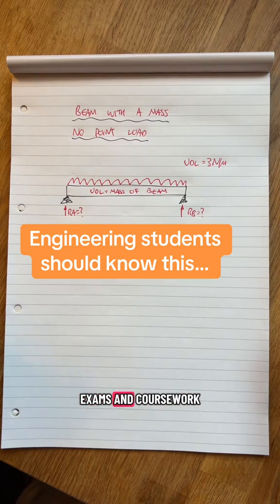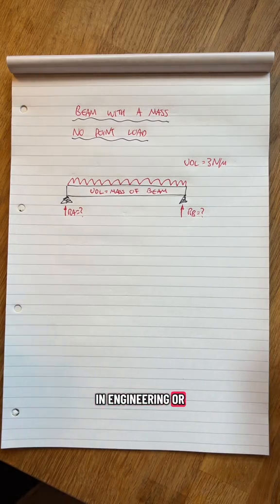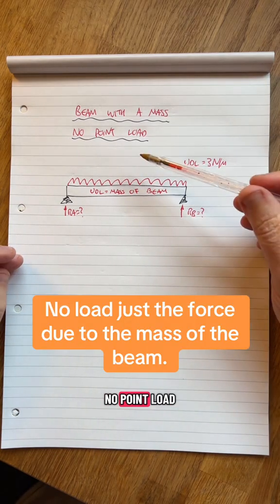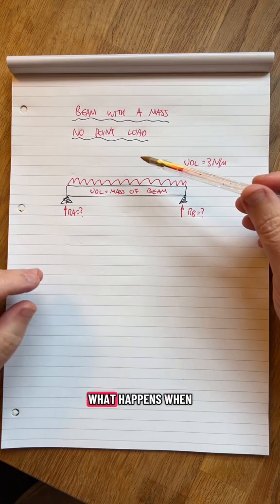The beam question is very popular in exams and coursework in engineering or A-levels. In this case, I've got a beam with a mass, no point load, so we need to work out what happens when we've got a UDL.